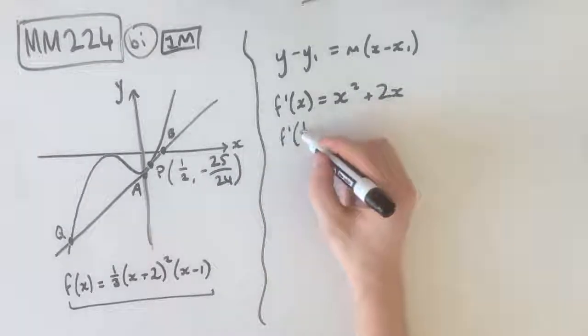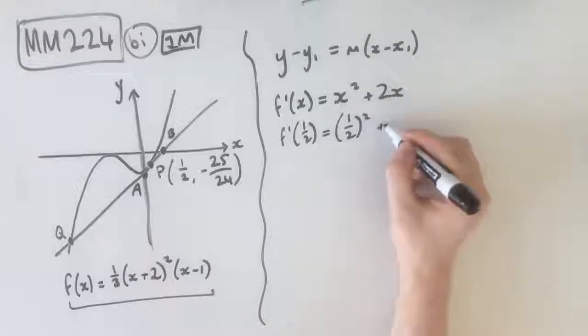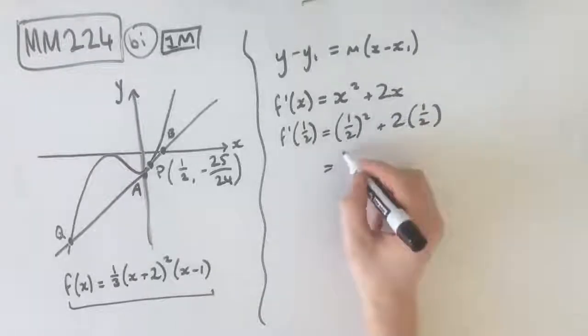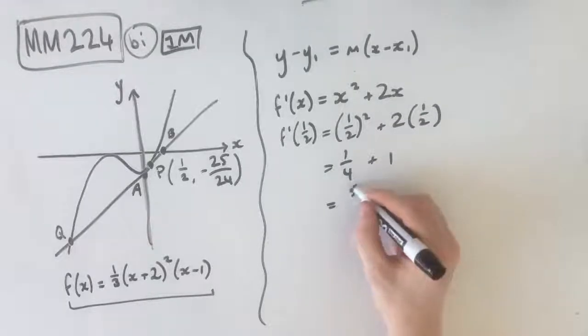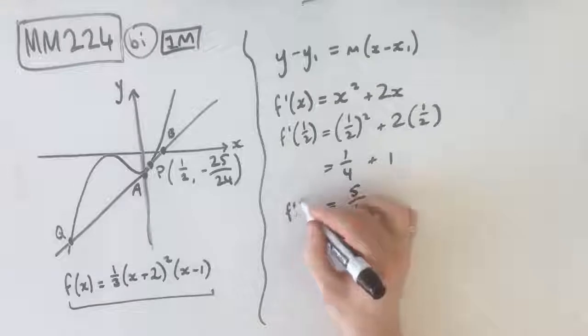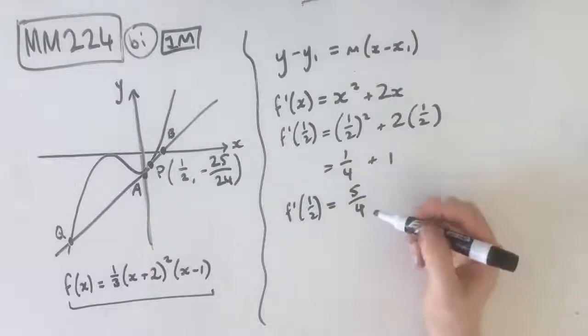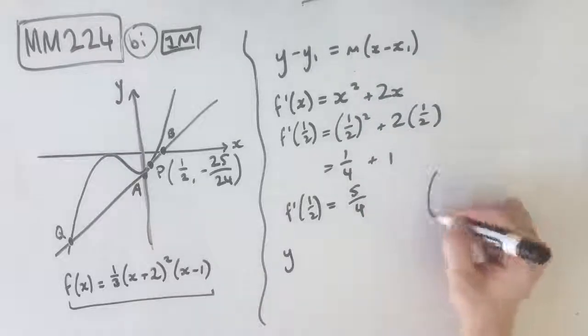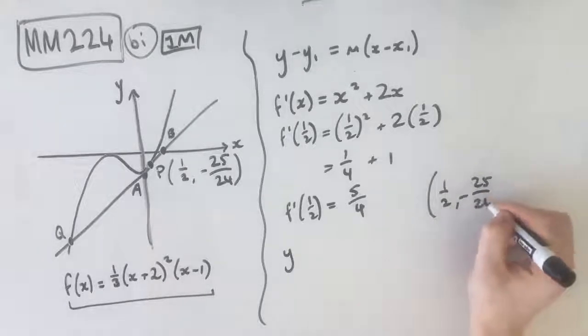We know that our x value is 1/2. We also know that our gradient function is x² + 2x, which is what we found in the previous part. Our x value is 1/2, so we simply sub 1/2 in. So we get f'(1/2) equals (1/2)² + 2 times 1/2. 1/2 squared is 1/4, 2 times 1/2 is 1, so 1/4 + 1 is 5/4. We know that our gradient of the tangent equals 5/4.